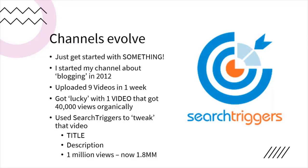I got lucky with one video. My thinking at the time was: if I upload five or six high-value branded videos, that'll bring traffic, and then I'd upload a network marketing video to promote the company I was working with. One video got 40,000 views organically. Then I used my software called Search Triggers — which I invented in 2012 — to tweak the title of that video, and it went from 40,000 to 1 million views very quickly. Now that one video has 1.8 million views.